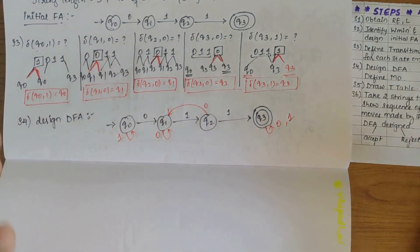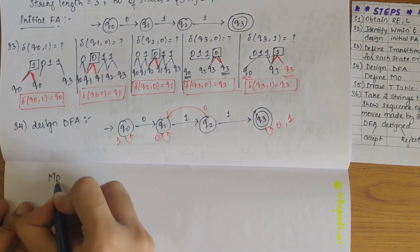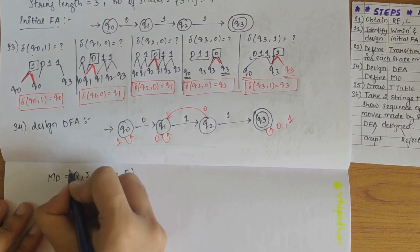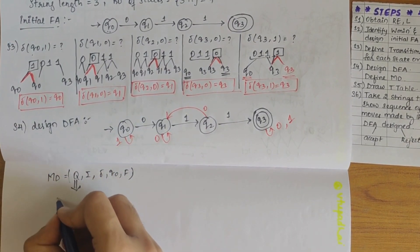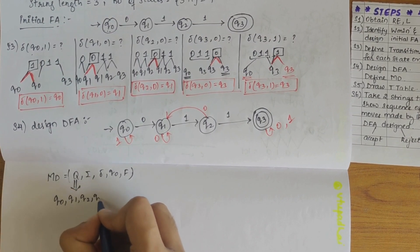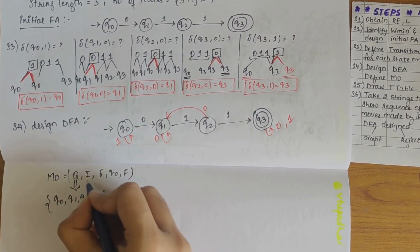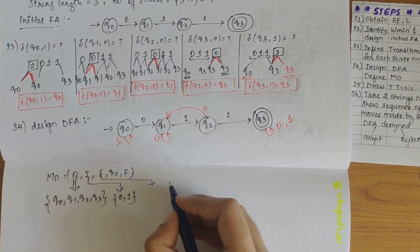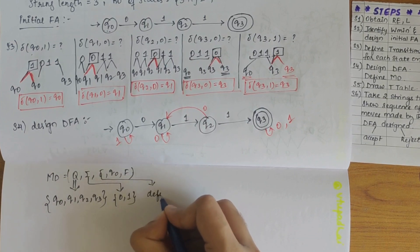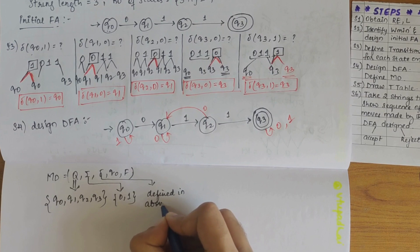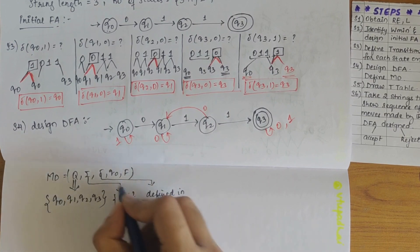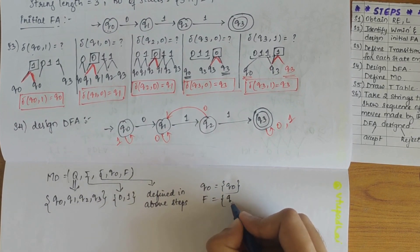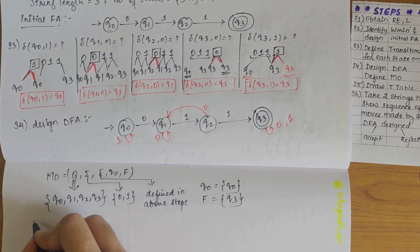Now let's define the MD values. MD = (Q, Σ, δ, Q0, F), where Q comprises all states Q0, Q1, Q2, Q3; sigma is {0, 1}; the transition function δ is defined in the above steps; Q0 is the start state; and F, the final or accepting state, is Q3.